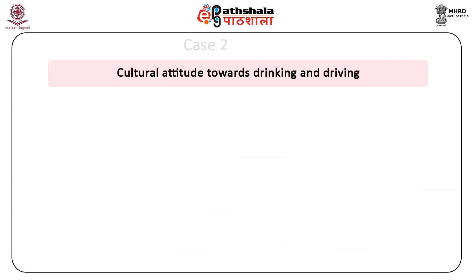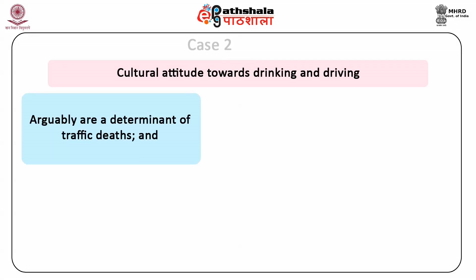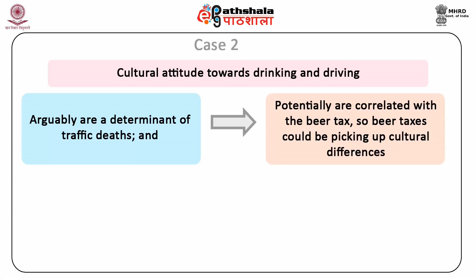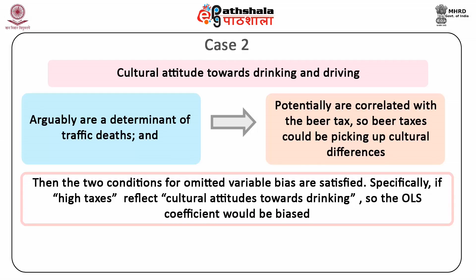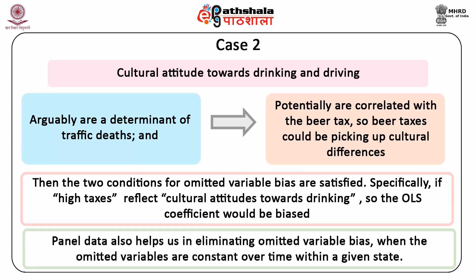Case 2: Cultural attitudes towards drinking and driving are arguably a determinant of traffic deaths and potentially are correlated with the beer tax — so beer taxes could be picking up cultural differences. The two conditions for omitted variable bias are satisfied. Specifically, if high taxes reflect cultural attitudes towards drinking, the OLS coefficient would be biased. Panel data also helps in eliminating omitted variable bias when the omitted variables are constant over time within a given state.